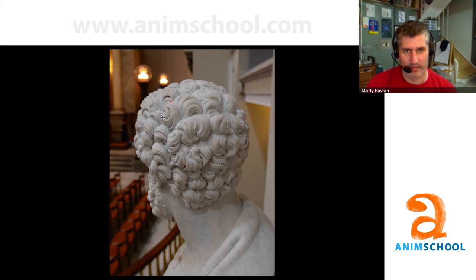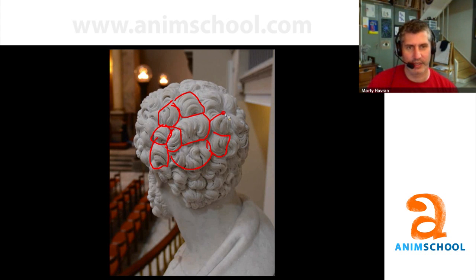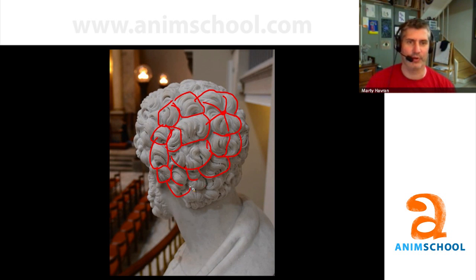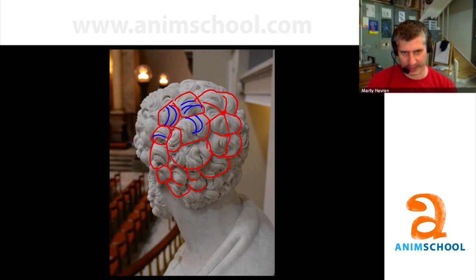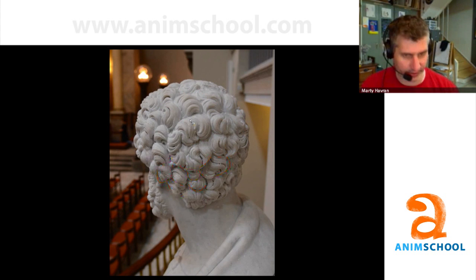I'm going to talk about hair tonight. If you look at all of these sections as big clumps, look at how this is radiating out — that's like one big shape through there. Another one through here. The shapes are varied all through here, and they're all going different directions. This is what I want you to think about when you do hair. It doesn't have to be this complicated, but it can have that kind of variation to it.